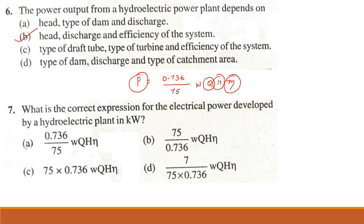Problem 7. What is the correct expression for the electric power developed by a hydroelectric power plant in kilowatts? The same answer: 0.736 divided by 75 times W, Q, H times eta.